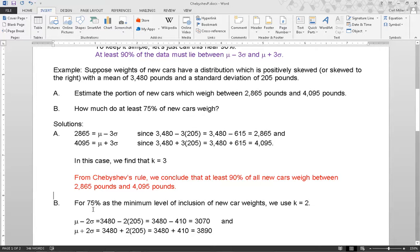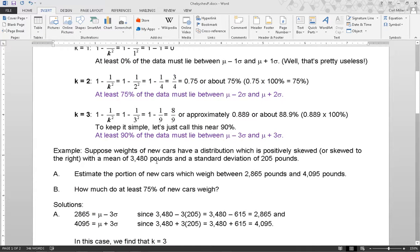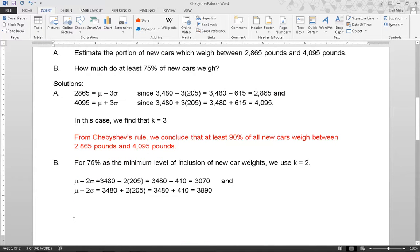B. For 75% as the minimum level of inclusion of new car weights, we use k equal to 2. mu minus 2 sigma equals 3,480 minus 2 times 205 which equals 3,480 minus 410 which equals 3,070 and mu plus 2 sigma equals 3,480 plus 2 times 205 which equals 3,480 plus 410 which equals 3,890.